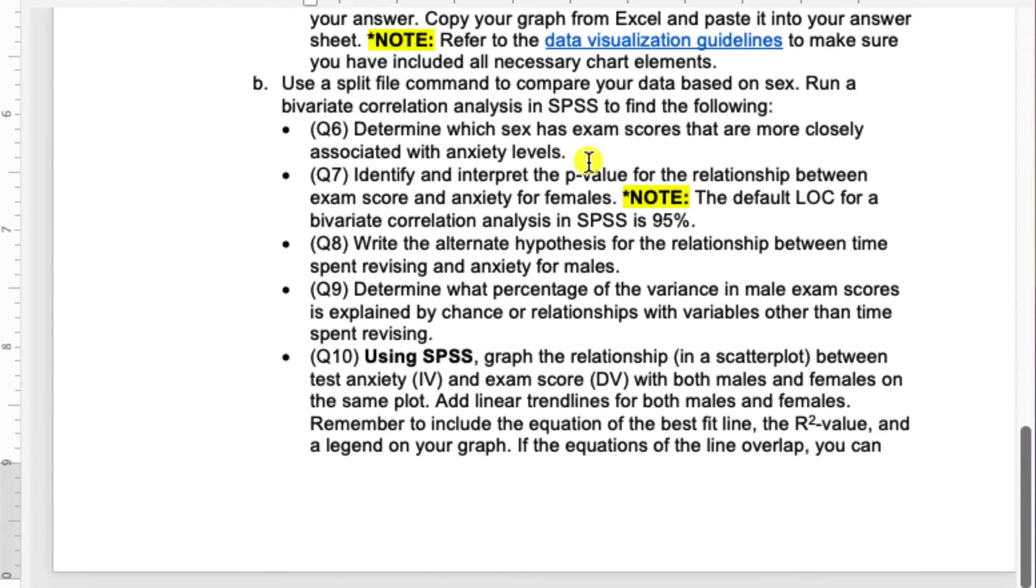For the second portion of the activity, you're going to be doing an analysis that splits your data based on sex. So looking at males versus females. You'll run a bivariate correlation analysis in SPSS. So this will generate a correlation matrix that you can then use to answer questions 6 through 9.